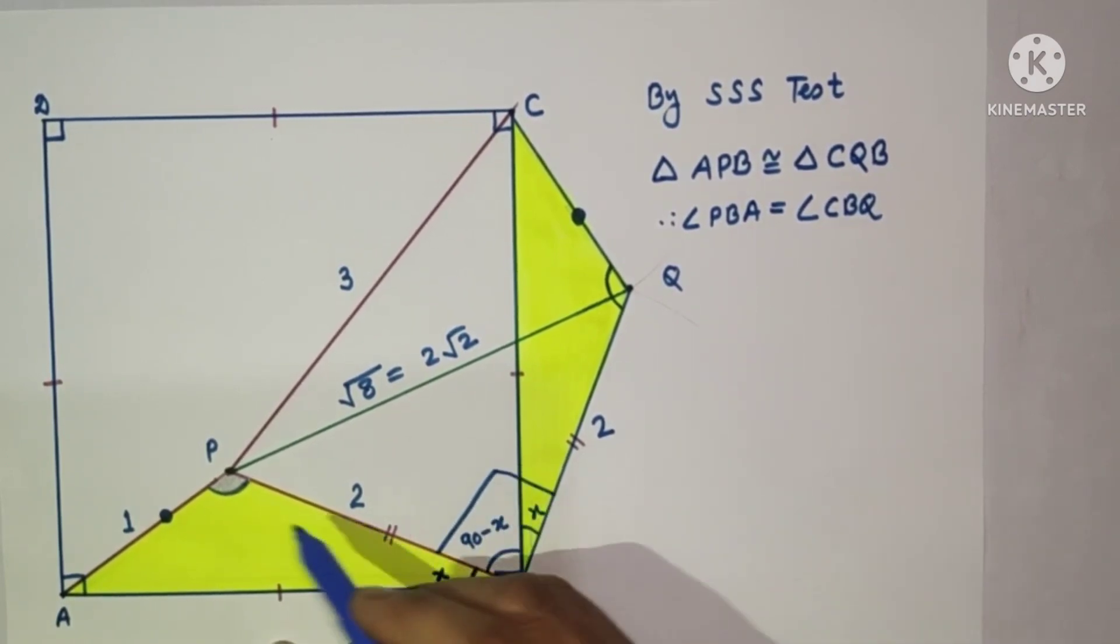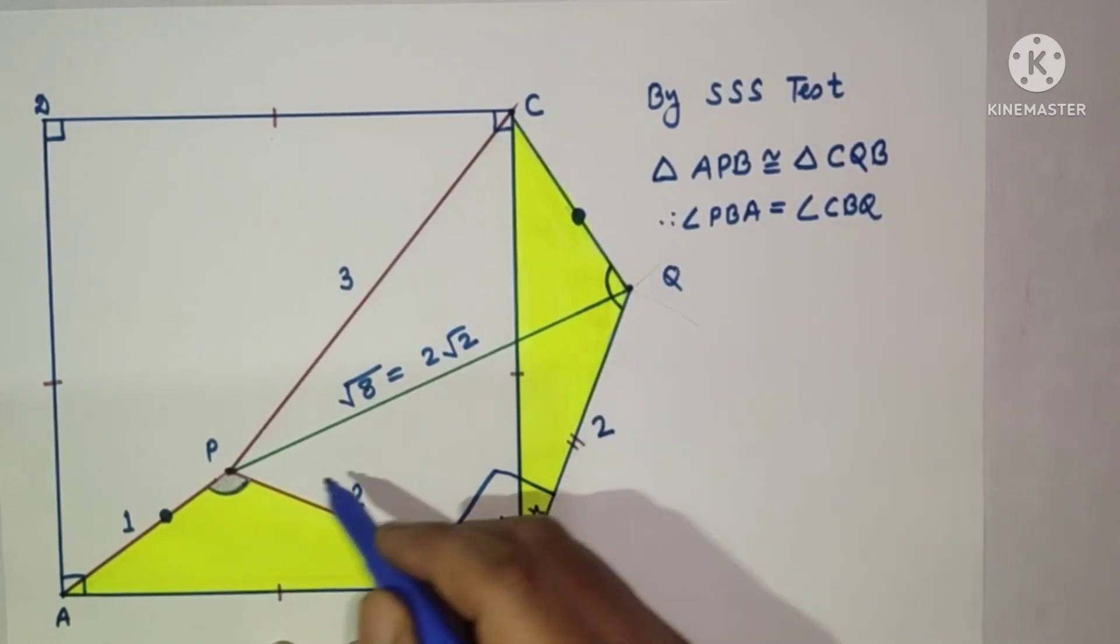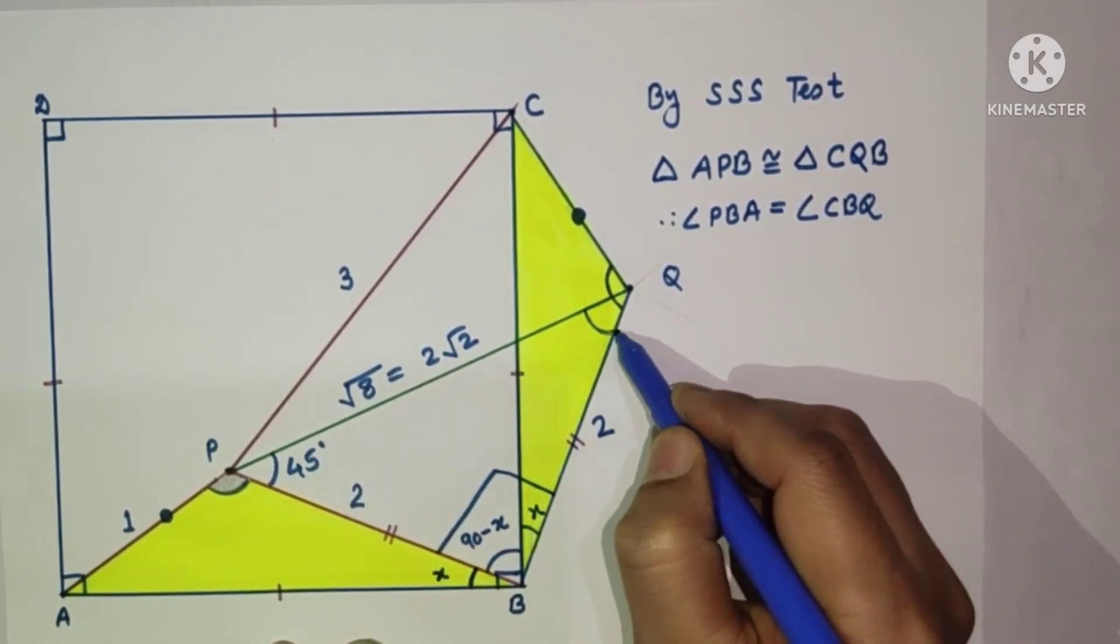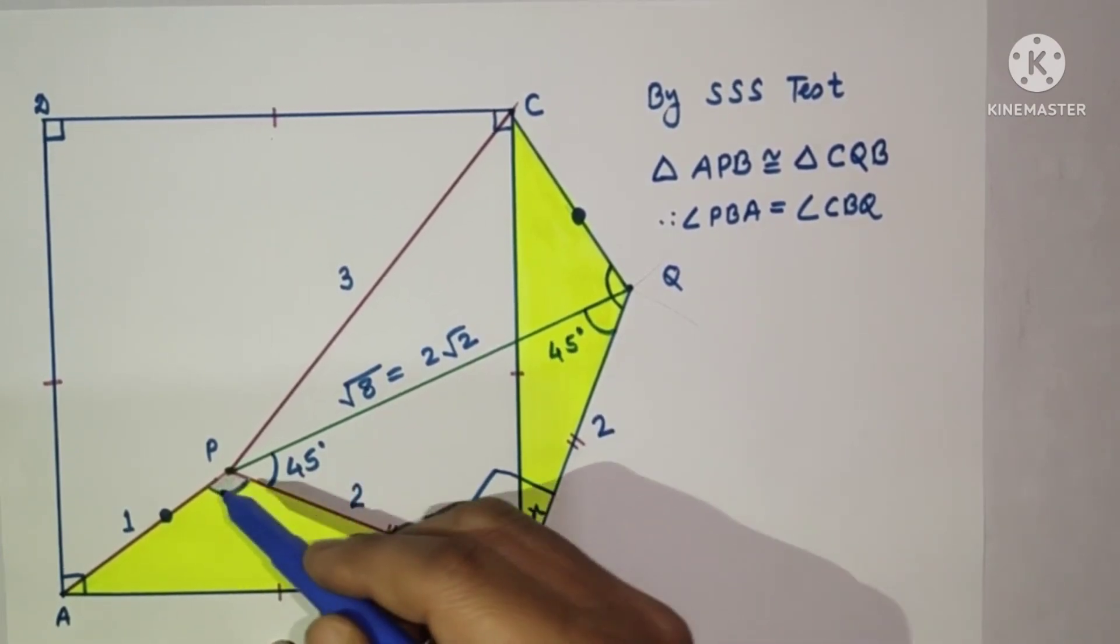And since this is 90, these two sides are equal, so the triangle is an isosceles triangle. This angle is 45, this will also be 45, this will also be 45, this will also be 45. Now consider triangle PQC.